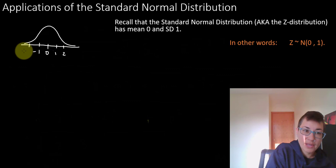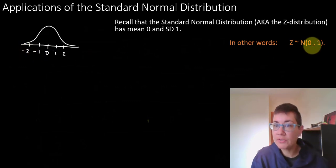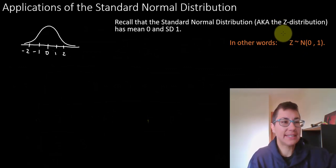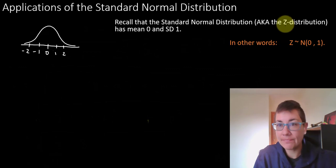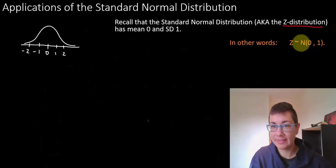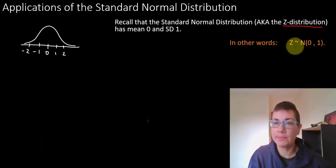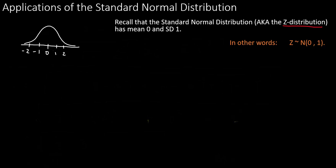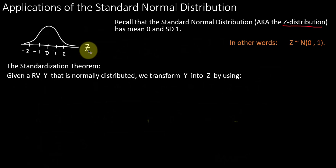Another way that we can write that using this squiggle notation — we sometimes call this the Z distribution, and we'll finally see why today. We could say that Z ~ N(0,1), so Z is distributed normally with mean 0 and standard deviation 1. I should label my axis Z. Let's see why this Z distribution is so important.